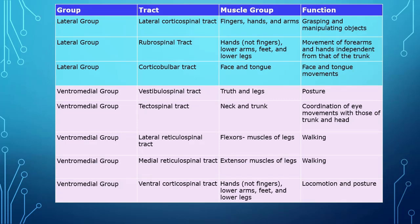To give you an easy summary, there's a table from the Pearson that should make this much easier. When thinking through what these systems do, you should have this slide. The important thing is to understand the difference between the lateral and the ventromedial group to help you zero in on what you should know, and you can go from there.